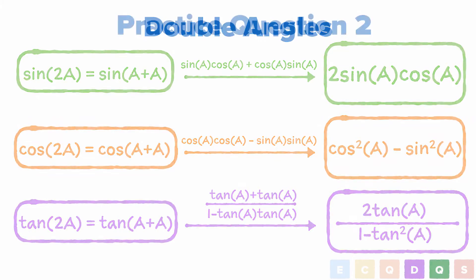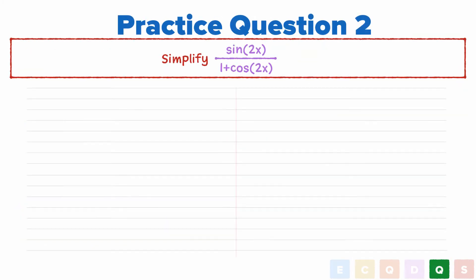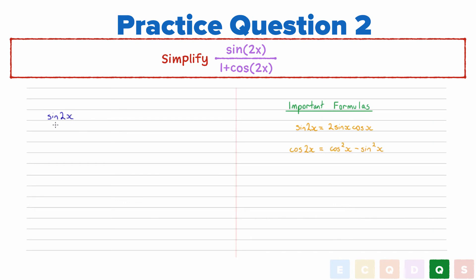Let's see what I mean with this question: Simplify sine 2x all over 1 plus cos 2x. Okay, so since we have double angles in the question, let's expand these out using our double angle formulas that we found for sine and cos. So we get, sine 2x all over 1 plus cos 2x is equal to 2 sine x cos x, all over 1 plus cos squared x minus sine squared x. Now we remember the fact that sine squared x plus cos squared x equals 1. So we can say, 1 minus sine squared x is equal to cos squared x. So if we sub that into the bottom line, we get 2 cos squared x.